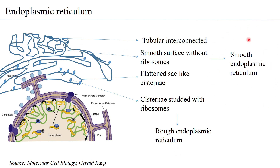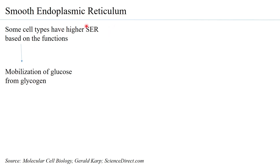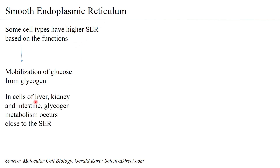One major function of smooth endoplasmic reticulum is mobilization of glucose from glycogen. Cells involved in glucose homeostasis — such as liver, kidney, and intestine — would have a higher amount of smooth ER present. Interestingly, wherever smooth ER is present, glycogen metabolism happens very close to it.